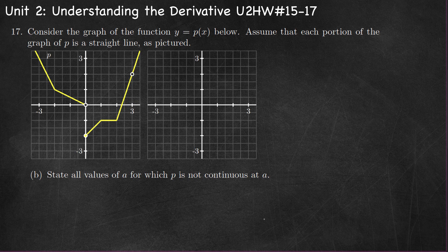Part B, state all values of a for which p is not continuous. It's not continuous at a equals zero because there's a jump discontinuity there. We also have a removable discontinuity at a equals three. So not continuous at a equals zero and not continuous at a equals three.